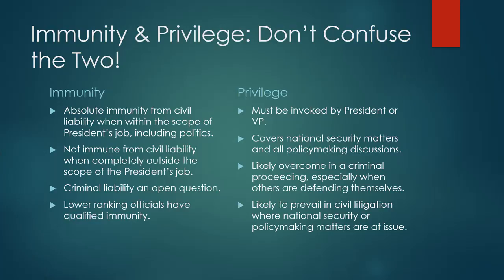Still talking about executive power under Article 2, finishing up some nuances and sub-issues. We talked in the last video about the president's power to appoint and remove people from office. Now we have to talk about two things: executive privilege and executive immunity. The first thing I note is not to confuse the two. There are two clauses in the Constitution called privileges and immunities clauses, which have absolutely nothing to do with what we're talking about here.